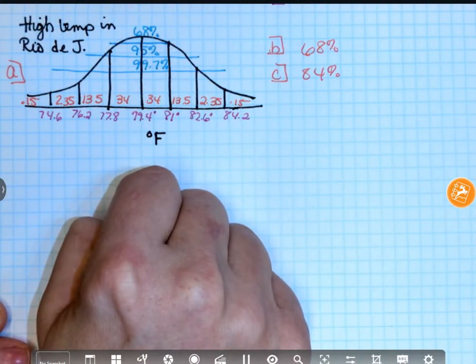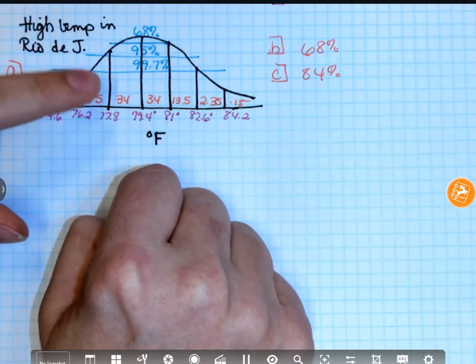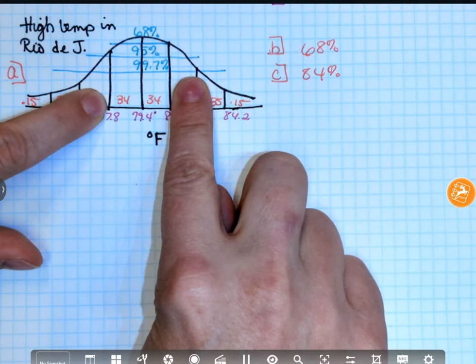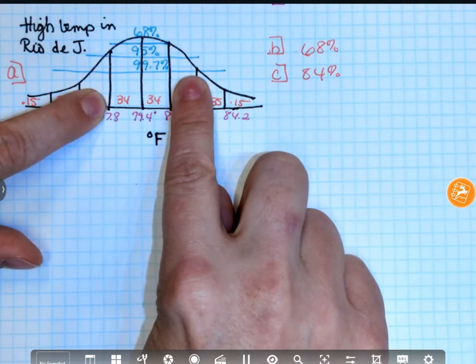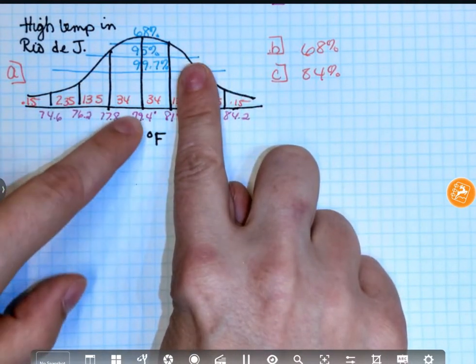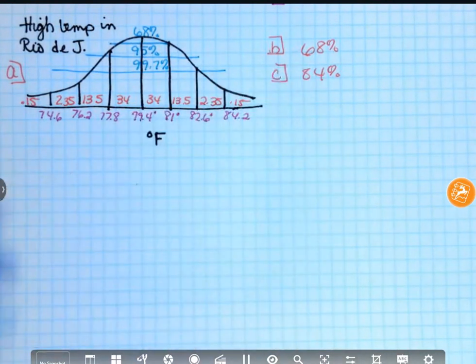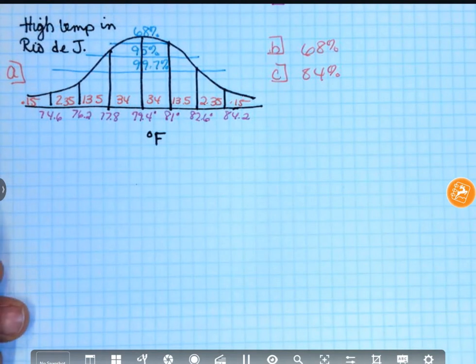It says, during a typical January, what percent would be between 77.8 and 81? Ah, 64%. What would you expect to be less than 81? I know that that is 50, because that's half of it. Plus 34 is 84%. You guys okay with that? Any questions?